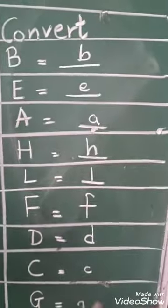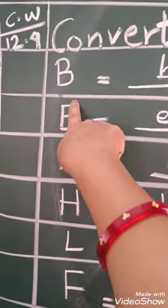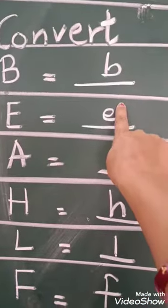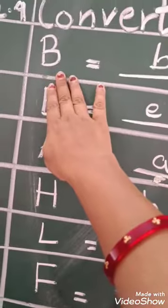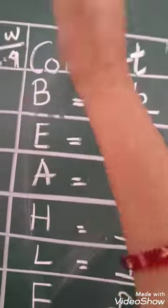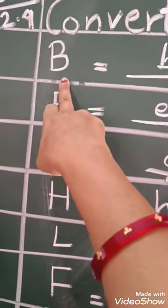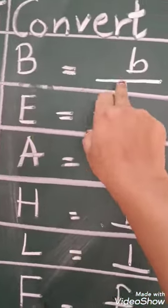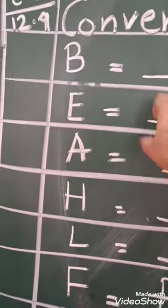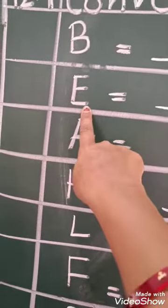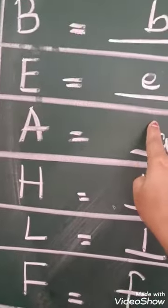Convert capital letter B to small b. You have to convert mama letter into baby letter. Mama letter B, baby letter B. Mama letter E, baby letter E.